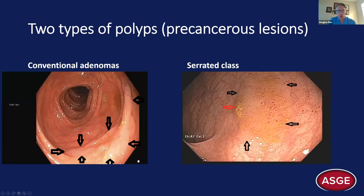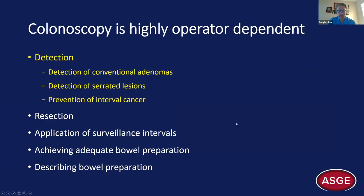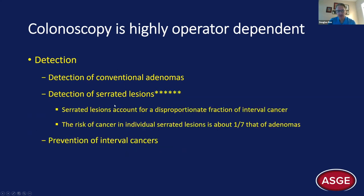To do colonoscopy from a detection standpoint, one of the things you have to bring to the procedure is a real understanding of the spectrum of subtlety present in precancerous lesions. We have two major classes: conventional adenomas and serrated lesions. Both can be extremely subtle, particularly the serrated lesions. We've seen variation demonstrated in detection of both classes, and variation is generally greater for serrated lesions.